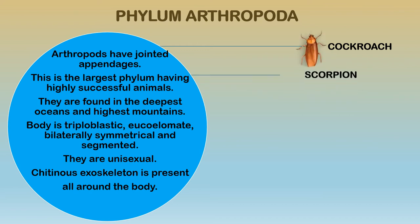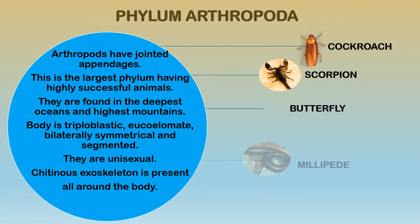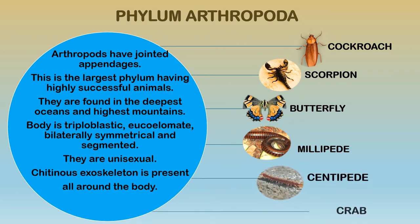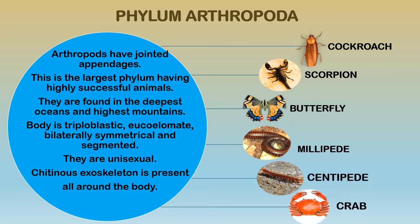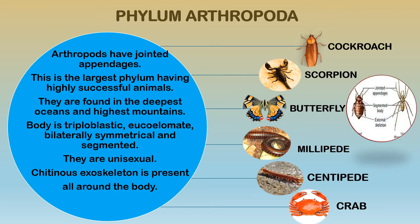The body of arthropods is triploblastic, eucoelomate, bilaterally symmetrical, and segmented. They are unisexual. A chitinous exoskeleton is present — as seen in the cockroach and scorpion, giving them a hard outer covering. Examples include insects, crabs, spiders, and various water animals, all with jointed appendages where the legs are joined but move in separate directions.